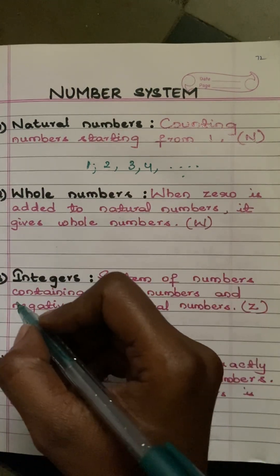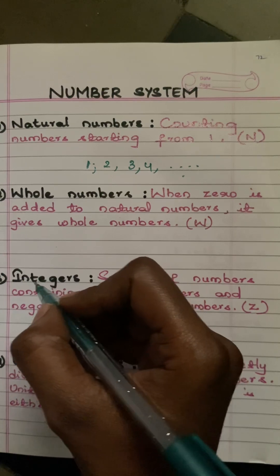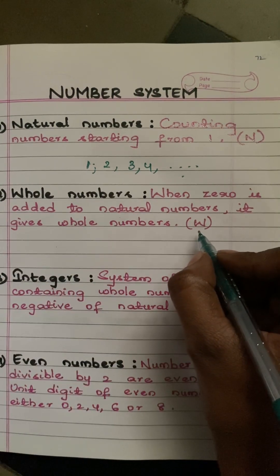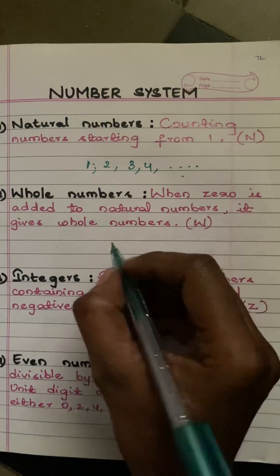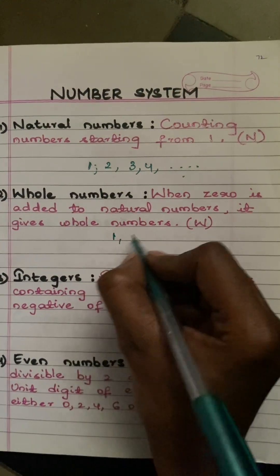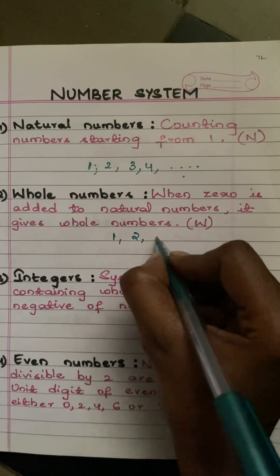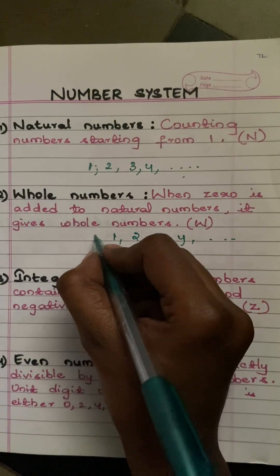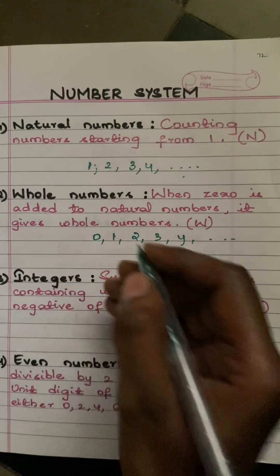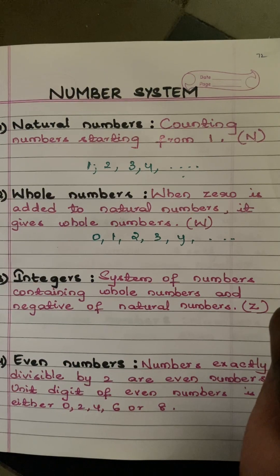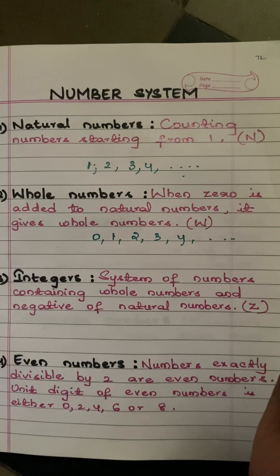Next we have whole numbers. When zero is added to natural numbers it gives us whole numbers, and whole numbers are represented by the letter W. Natural numbers are the counting numbers one, two, three, four and so on, and when we add zero to them they become a set of whole numbers.